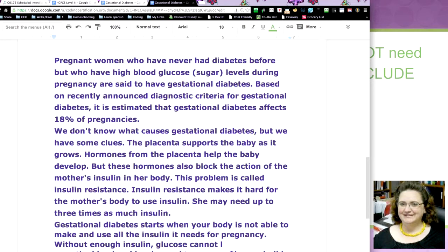And they have found that like 18% of women in their pregnancies get gestational diabetes and you can have it one time and not have it another. They don't know the cause, but they do know it has something to do with the placenta that supports the baby when it grows, that hormones from the placenta help the baby develop, but these hormones also block the action of the mother's insulin in the body. So this problem is called insulin resistance and if you have insulin resistance, it makes it hard for the mother's body to use the insulin.